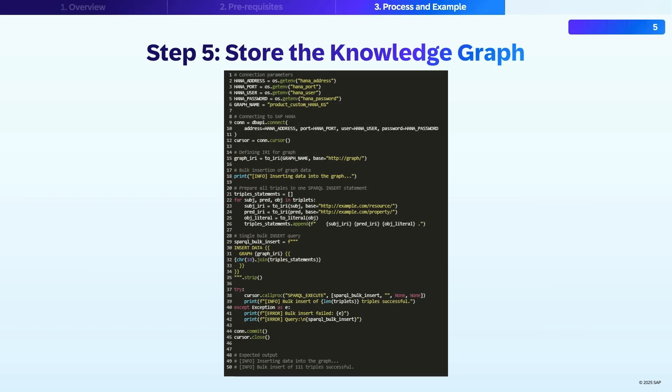After the transformation, the SAP HANA SPARQL Execute procedure is used to store the extracted triples as a knowledge graph in HANA. SAP HANA's knowledge graph engine comprises a HANA triple store for storing RDF data and a SPARQL query engine for querying the graph. Storing your data this way allows you to run advanced SPARQL queries and integrate knowledge graph results with other SAP tools and business processes.